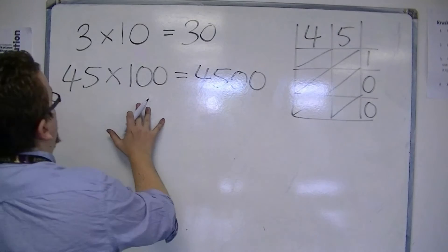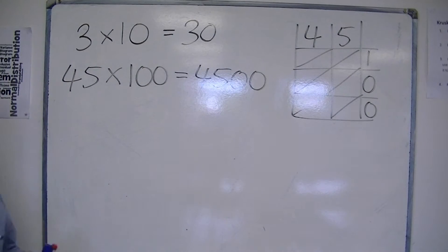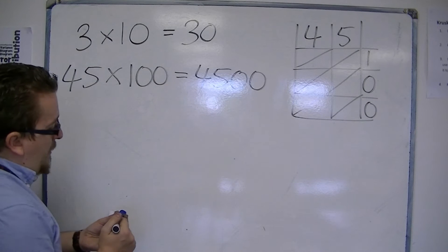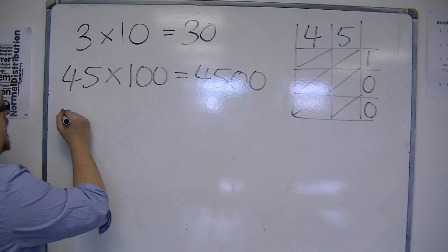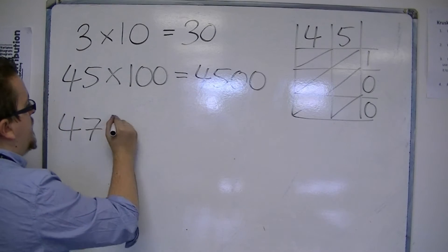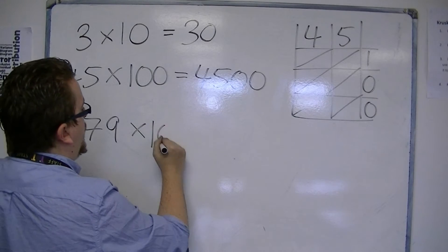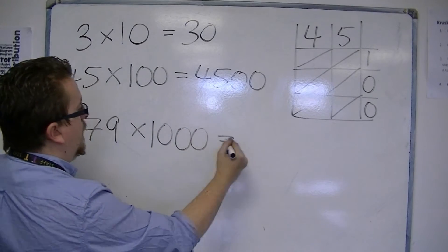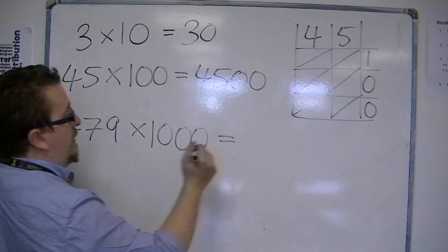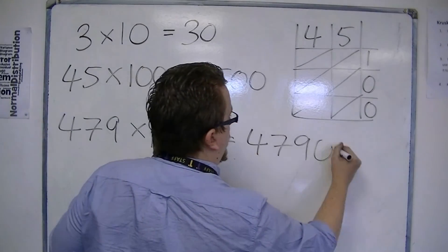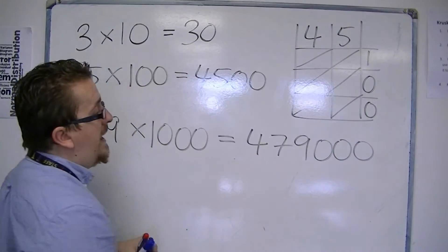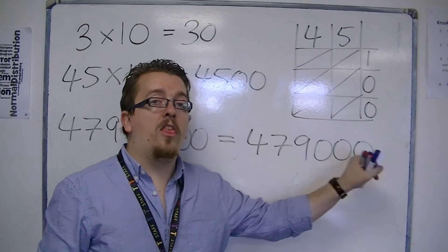What you want is a method like this, where it's nice and straightforward. So, if you had something like 479 times by 1000, then you have the 479 and three zeros. So we can then have 479,000.